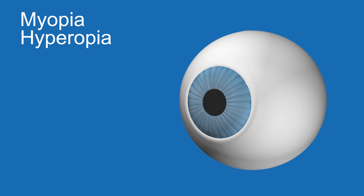There are two prominent types of vision: myopia and hyperopia. These two types affect up to one-third of the population and can be treated in a variety of ways, from corrective lenses to surgery.